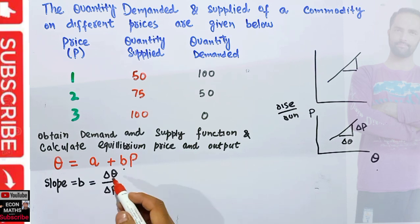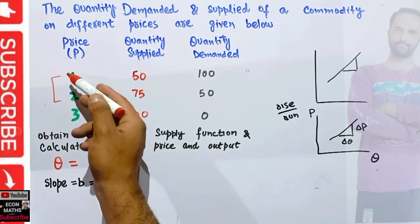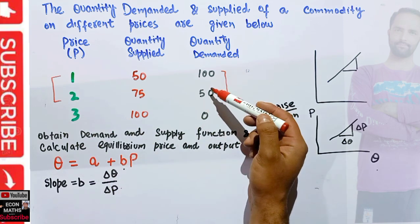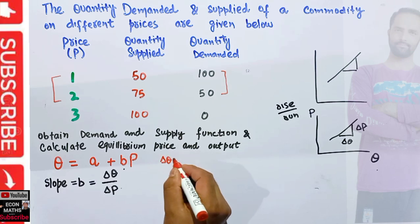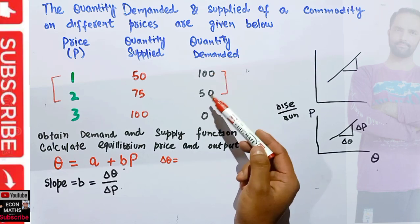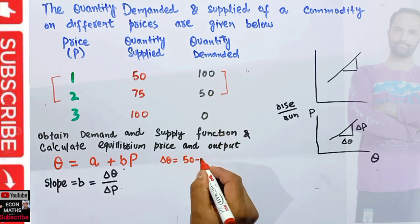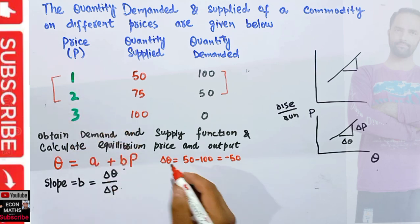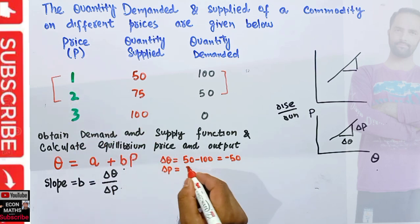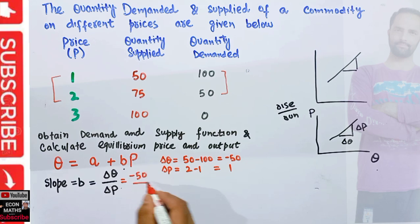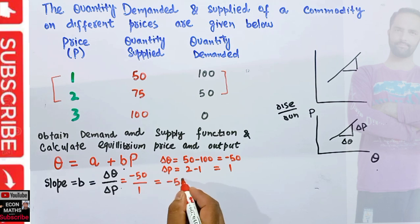To find the change in quantity demanded and change in price, we take any two price and quantity schedulers. The quantity demanded has changed from 100 units to 50 units, so the change is 50 minus 100, which comes out to be minus 50. Corresponding to this, price has changed from $1 to $2, so change in price is 1. That means B equals minus 50 upon 1, which is minus 50.